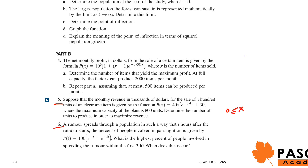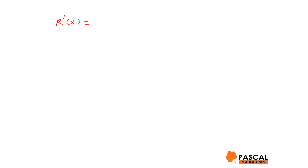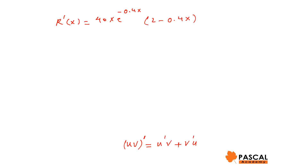Again we use the same algorithm and find R'(x). R'(x) = 4xe^(-0.4x)(2 − 0.4x), applying the product rule: derivative of u and v is u'v + v'u. Setting this equal to 0, x is either 0 or 2 − 0.4x = 0, giving x = 5 (i.e., 500 units).